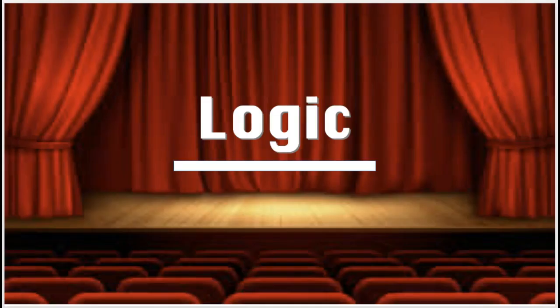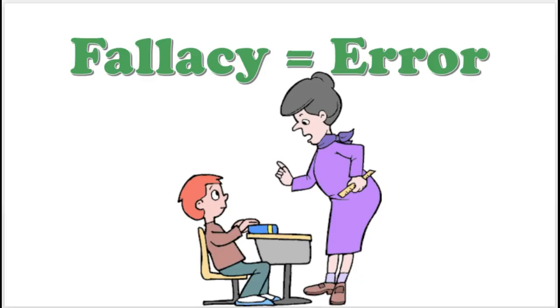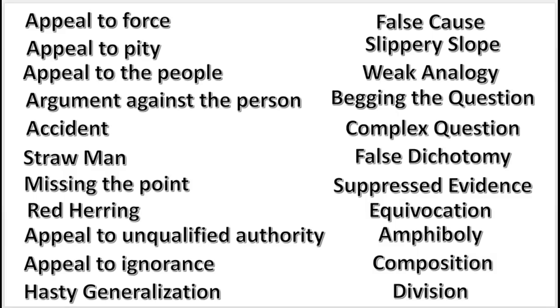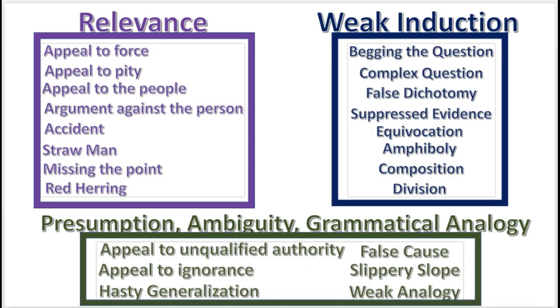Ladies and gentlemen, welcome to this episode in Logic. We are currently discussing informal fallacies. A fallacy is an error or a defect in an argument. Here's a list of some 22 informal fallacies. I know it seems like a lot to learn, and it is, but this logic series is the easiest and fastest way to learn it. These 22 informal fallacies can be divided into three categories.